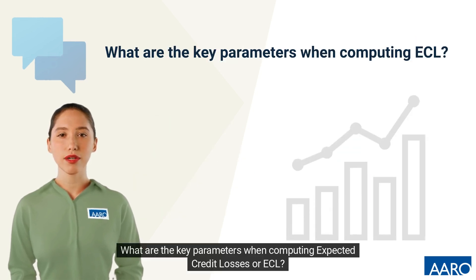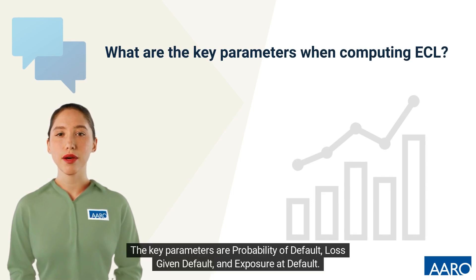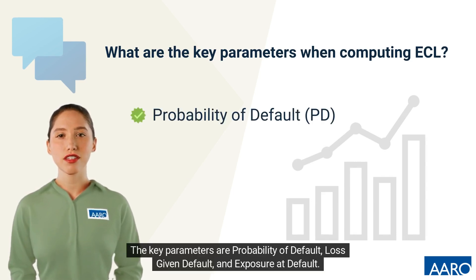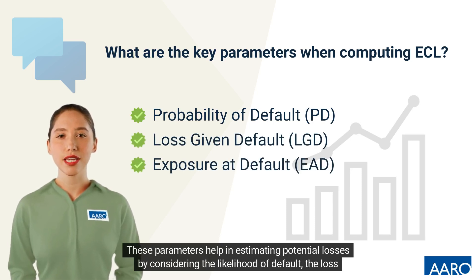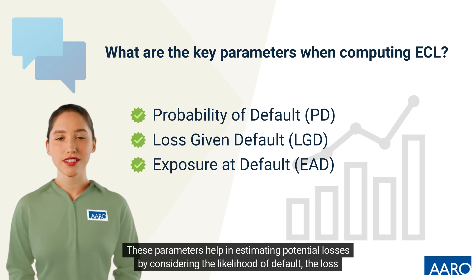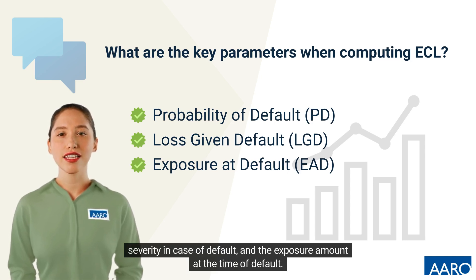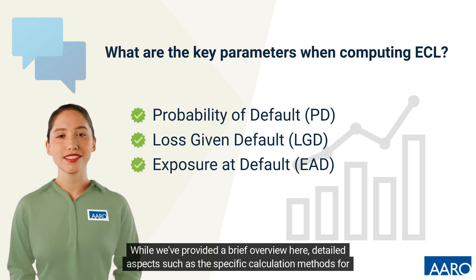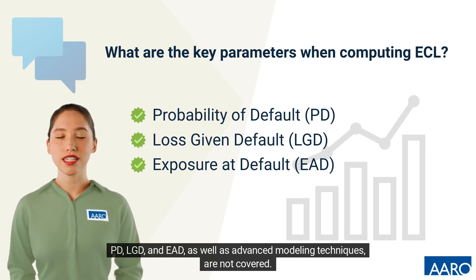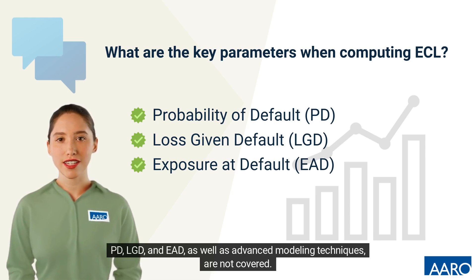What are the key parameters when computing expected credit losses, or ECL? The key parameters are probability of default, loss given default, and exposure at default. These parameters help in estimating potential losses by considering the likelihood of default, the loss severity in case of default, and the exposure amount at the time of default. While we've provided a brief overview here, detailed aspects such as the specific calculation methods for PD, LGD, and EAD, as well as advanced modeling techniques, are not covered.